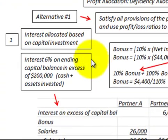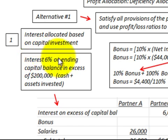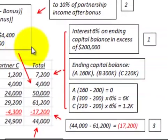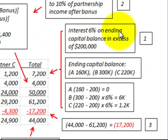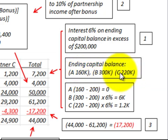First, we have to allocate interest based on capital investment. The partnership uses a six percent interest rate on the ending capital balance in excess of two hundred thousand dollars. The ending capital balances are: Partner A — $160,000, Partner B — $300,000, Partner C — $220,000. They must exceed two hundred thousand dollars to receive any interest, so Partner A gets zero.